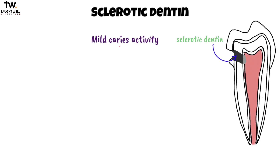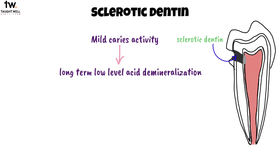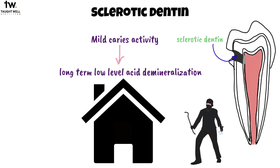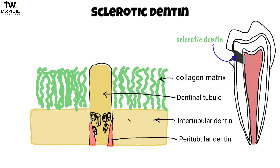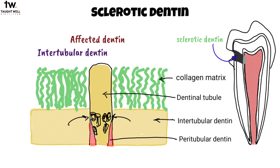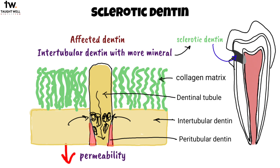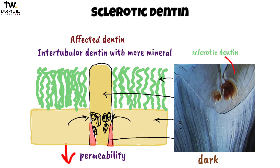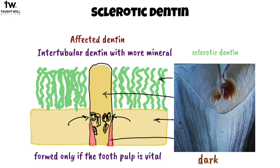Sclerotic dentin forms in the initial stages of caries. Dentin responds to demineralization by deposition of crystalline material from intertubular dentin into the lumen of the tubules — this was previously called affected dentin. The intertubular dentin with more mineral content than normal dentin is termed sclerotic dentin. Its function is to wall off a lesion by blocking the tubules, greatly reducing permeability. Sclerotic dentin is shiny, darker in color, hard to the explorer tip, and can only be formed if the tooth pulp is vital.